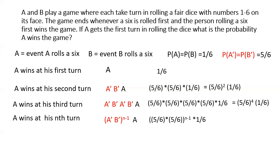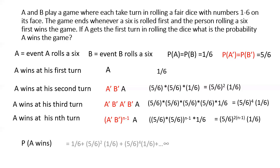To get the probability that A wins the game, we sum up the probabilities of all possible scenarios. Theoretically n can go up to infinity, so we evaluate an infinite series: 1/6 + (5/6)² × 1/6 + (5/6)⁴ × 1/6 and so on. Taking 1/6 as common factor, inside the parenthesis we have 1 + (5/6)² + (5/6)⁴ continuing to infinity — an infinite GP series with first term 1 and common ratio (5/6)².